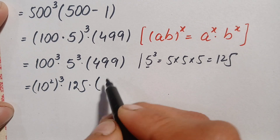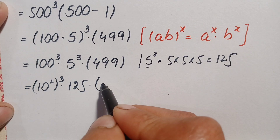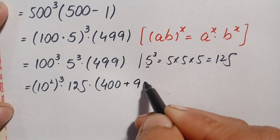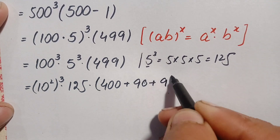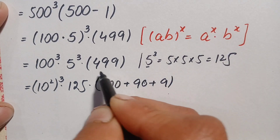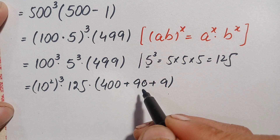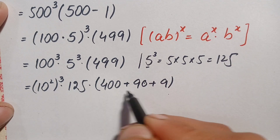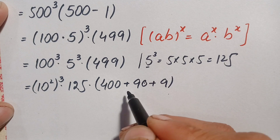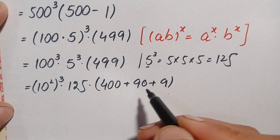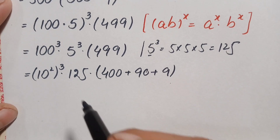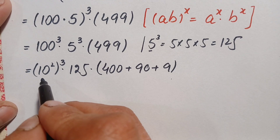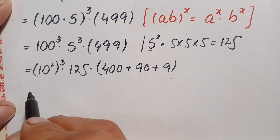We rewrite 499 as the sum of 400 plus 90 plus 9. We change 499 to the sum of these three numbers because multiplying 125 by each of these individually is very easy, requiring no rough work or standard multiplication.